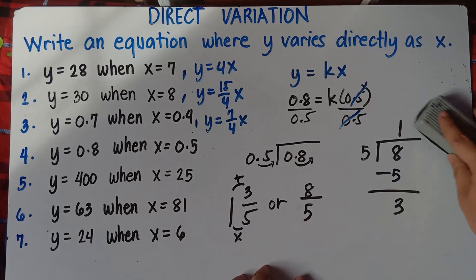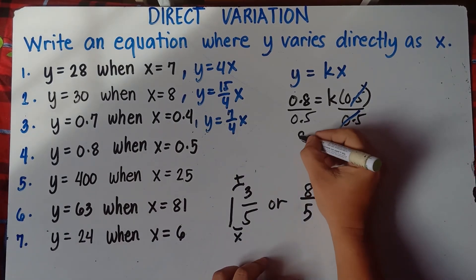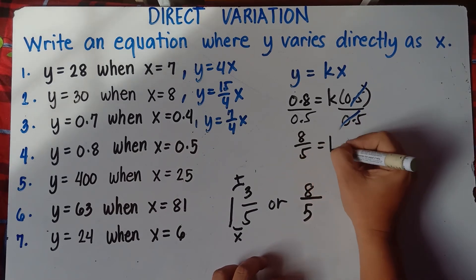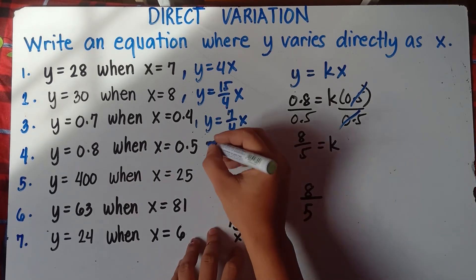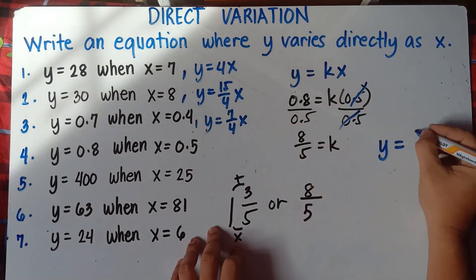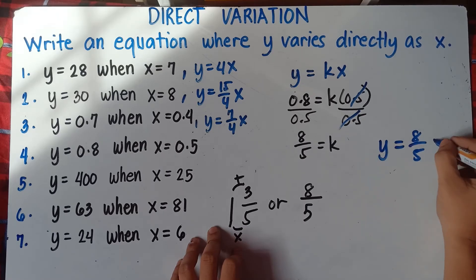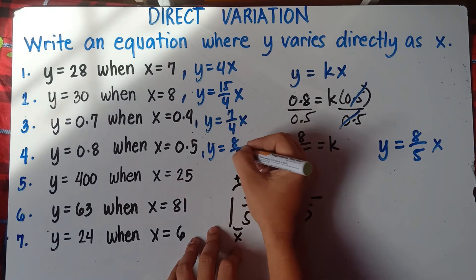k equals 8 over 5. Can we divide 8 by 5? No — we get a decimal answer and it's complicated. Can we reduce? No, we cannot reduce 8 and 5. So that would be our final answer. Simply copy y equals, our k is 8 over 5, then copy x. The answer is y equals 8 over 5 x.